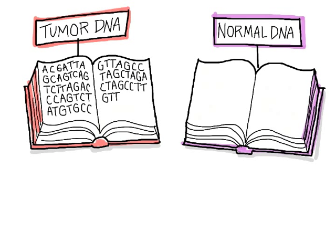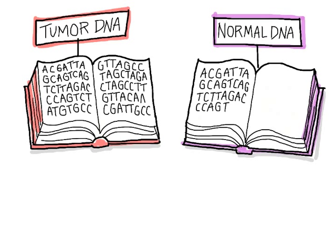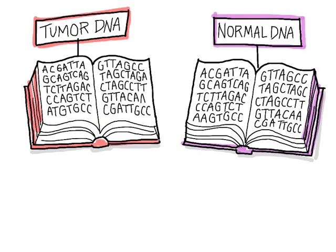The tumor DNA book and the normal DNA book are then compared, letter by letter. In most places, the books are the same. But in a few places, the letters of the books are different. These differences represent mutations in the tumor DNA that resulted from DNA damage.